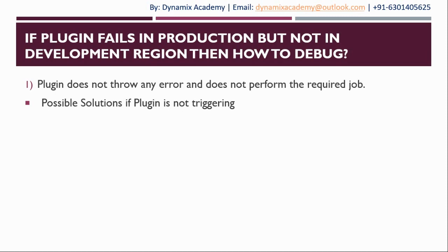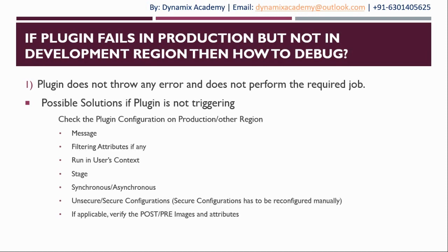If the plugin is not throwing an error but still not performing any required job, and the first situation is that the plugin itself is not triggering, then if you are writing trace logs you can enable tracing and check whether the plugin is triggering. If you find that the plugin itself is not triggering, you need to check the plugin configuration on the production environment. First, check the message for which the plugin is written. If any filtering attributes in case of an update message need to be set, re-verify on production that the filtering attributes, message, and entity are correctly configured. Also verify that the 'run in user context' field is set correctly — if it differs from the development region, that can be a failure cause as well.